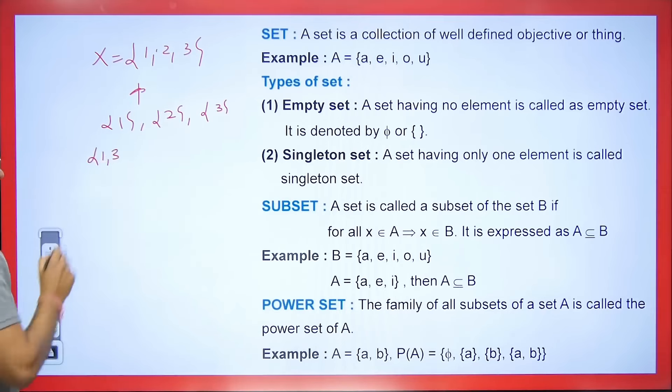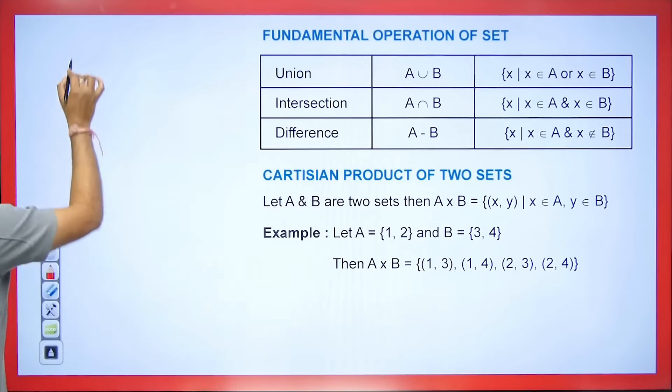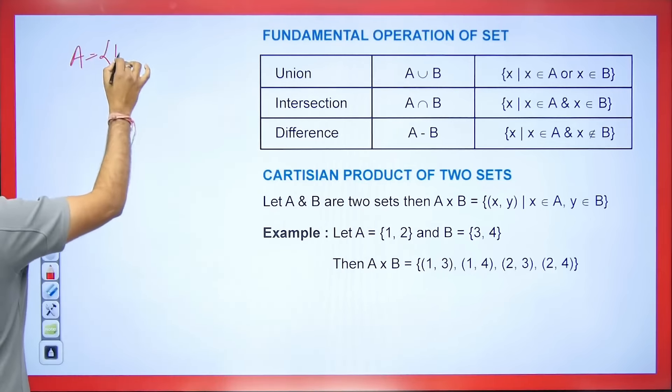Now here are some fundamental operations that happen when we talk about sets. Between two numbers we have addition, multiplication, division, and subtraction — we know this. But which operations happen between sets? There is no addition, subtraction, or division here. Instead, we have union, intersection, Cartesian product, and difference. I want to explain these — we will study them, and I will quickly give an overview because questions come in exams.